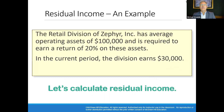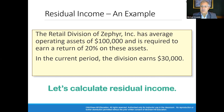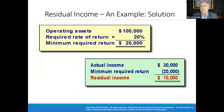Here's an example. The retail division of Zephyr Inc. has average operating assets of $100,000 and is required to earn a return of 20% on these assets — so they were expected to earn $20,000. In the current period, the division earns $30,000. They earned $30,000 but were expected to earn $20,000, so the residual income is $10,000.